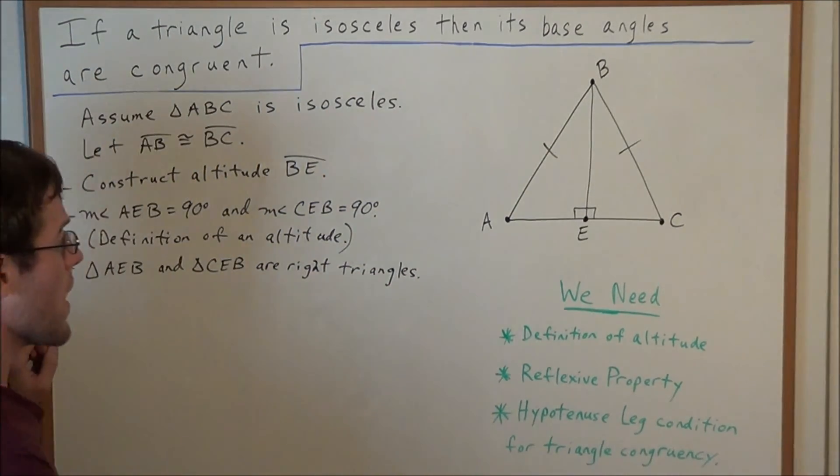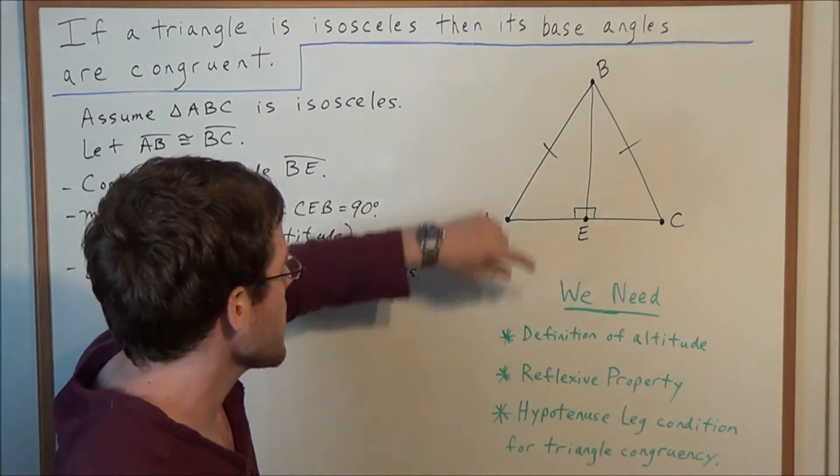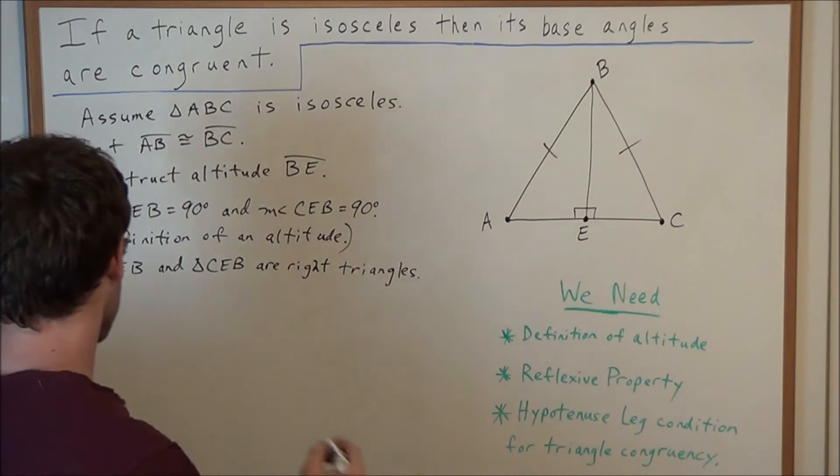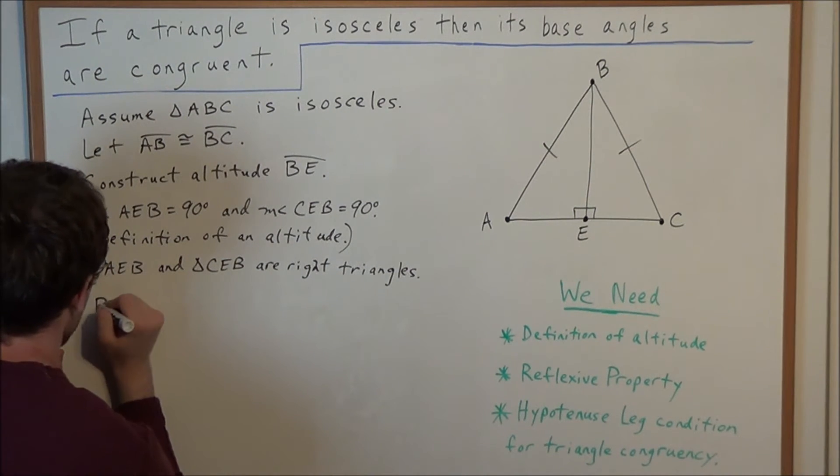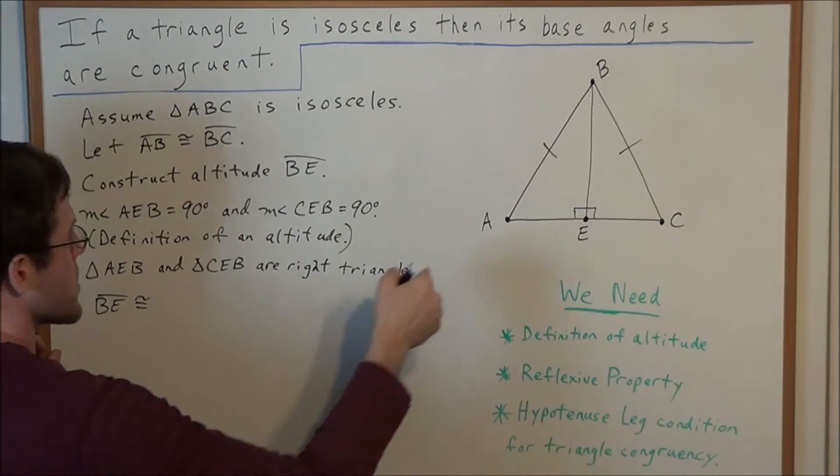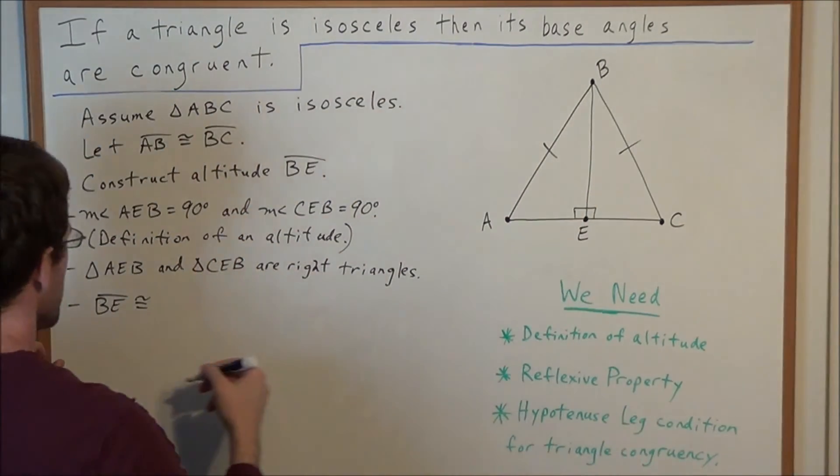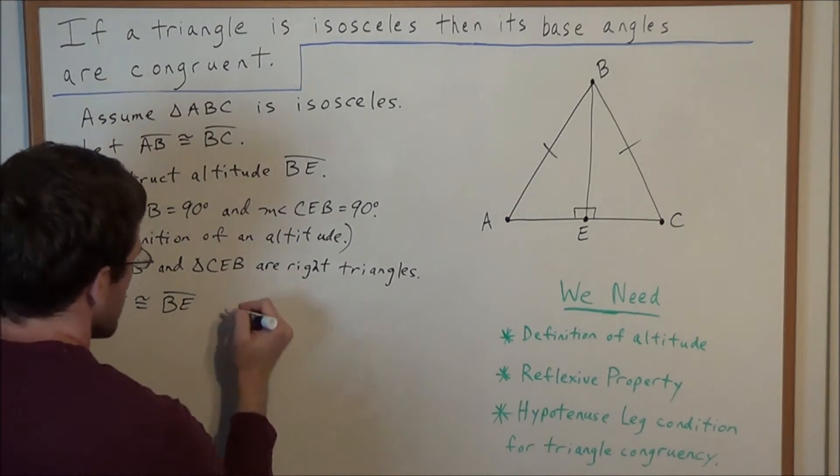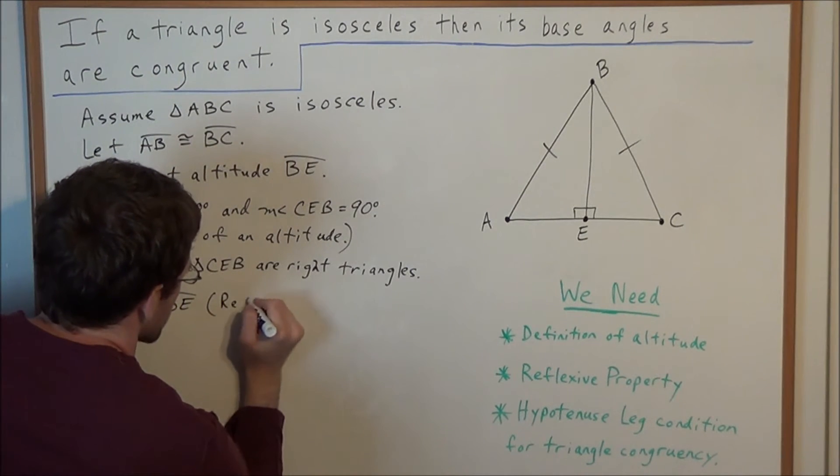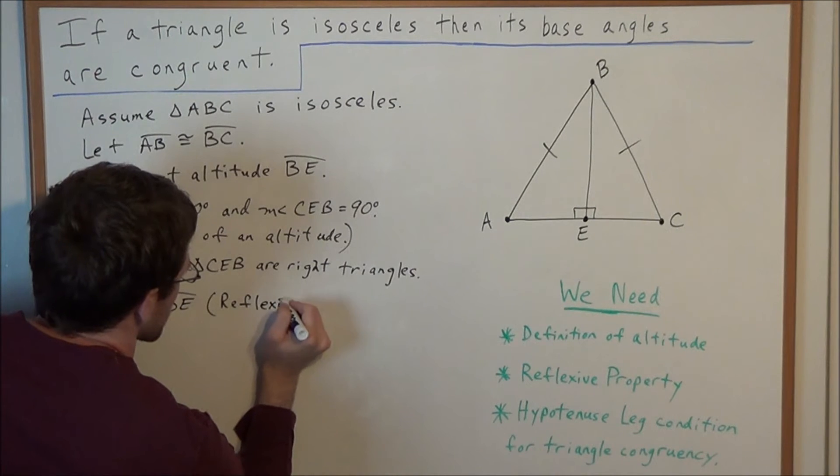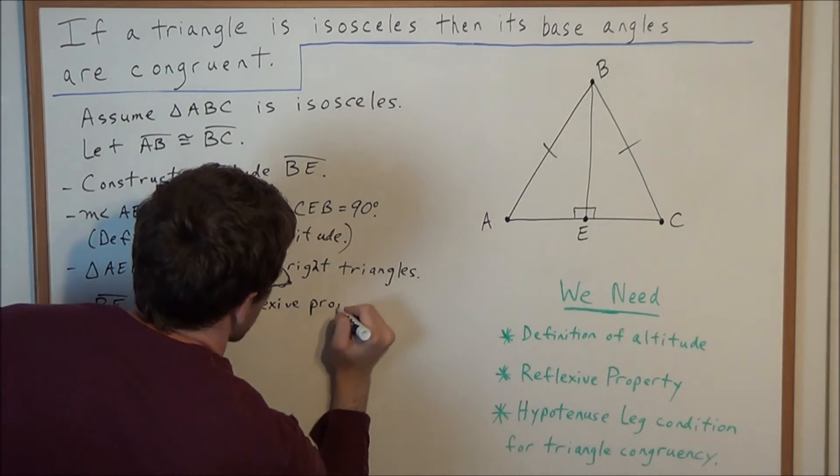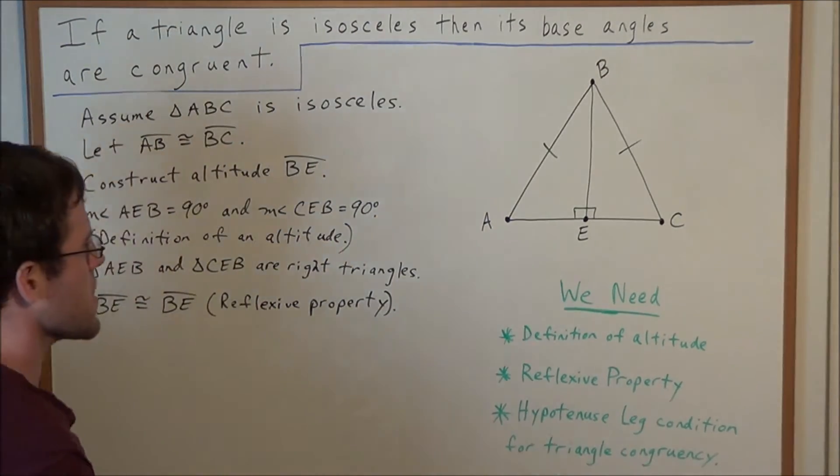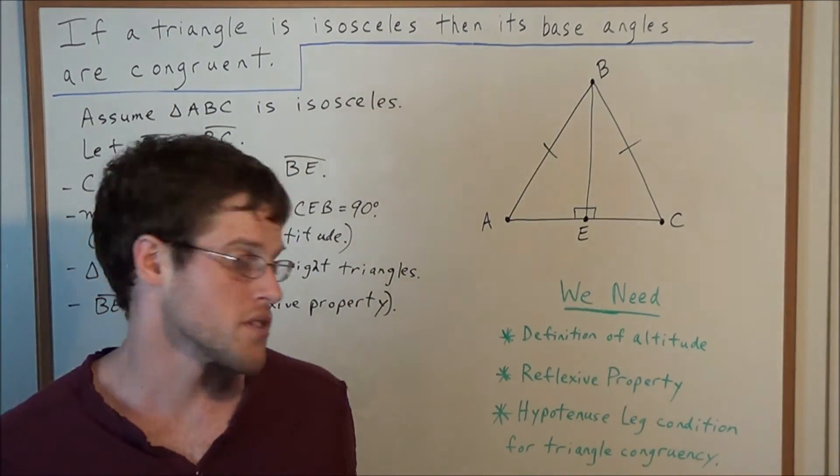Okay, so now, the next step, we could say that line segment BE is congruent to itself. This seems really obvious, but this is critical for proving that these two triangles are congruent. So, we say that line segment BE is congruent to line segment BE by the reflexive property of equality. Which, if we think about the reflexive property, all it states is that some line segment or some figure is congruent to itself.